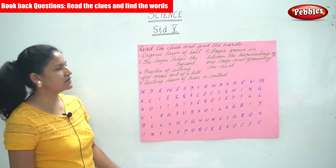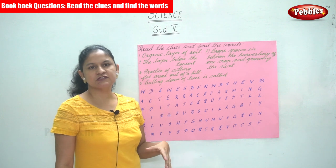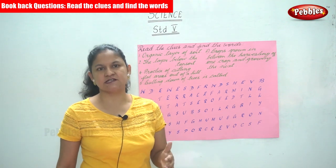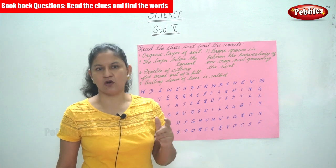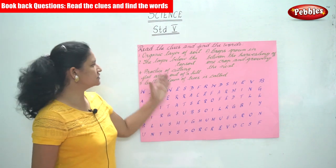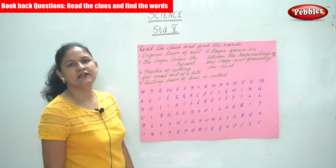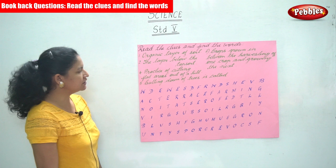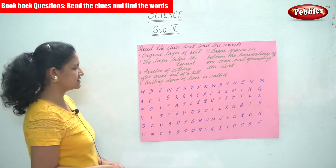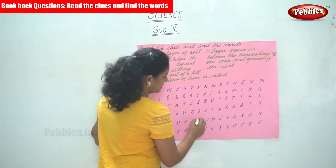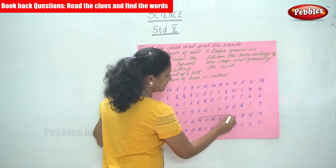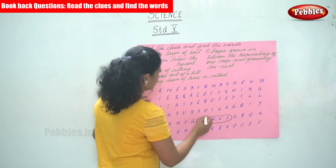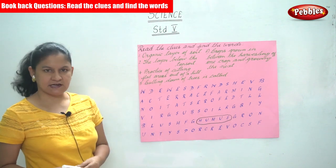The first clue is: organic layer of soil. When we went through the soil profile, we found that the first layer is the organic layer, or the humus layer. So the organic layer of soil is the humus layer. H-U-M-U-S. This is the humus layer.